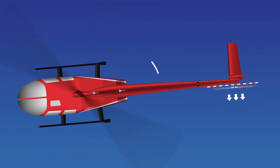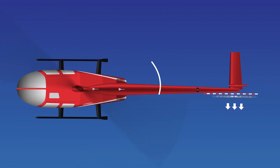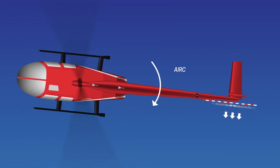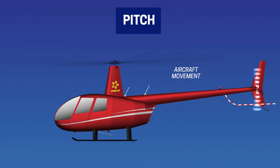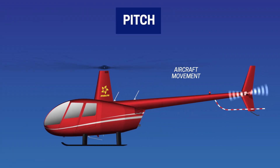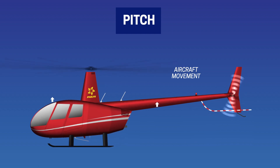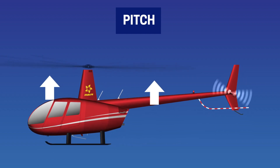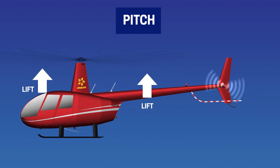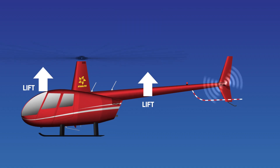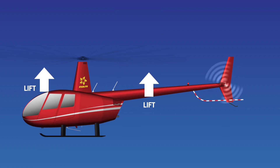If you imagine putting your hand out of a moving car's window with your palm down, as you twist your palm into the wind, your hand wants to lift up. This twisting is called pitch. Pitch on an aerofoil creates lift. The tail rotor uses this principle. More pitch means more thrust and less pitch means less thrust.